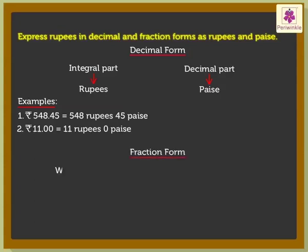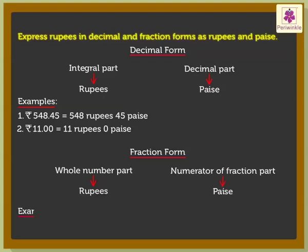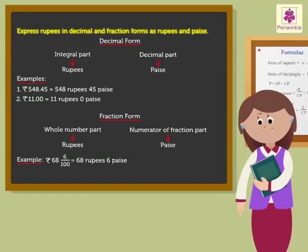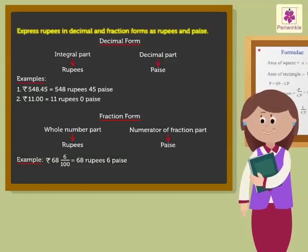For rupees in fraction form, the whole number part is rupees and the numerator of the fraction part is paise. Thus, 68 and 6 upon 100 is 68 rupees and 6 paise. Learning about rupees and paise will be very helpful in your day-to-day transactions.